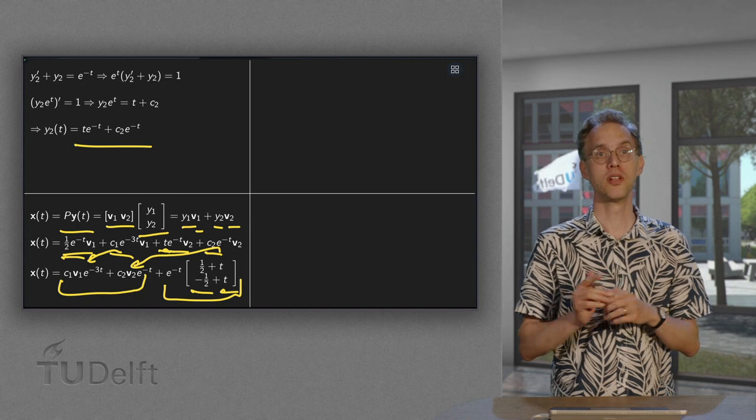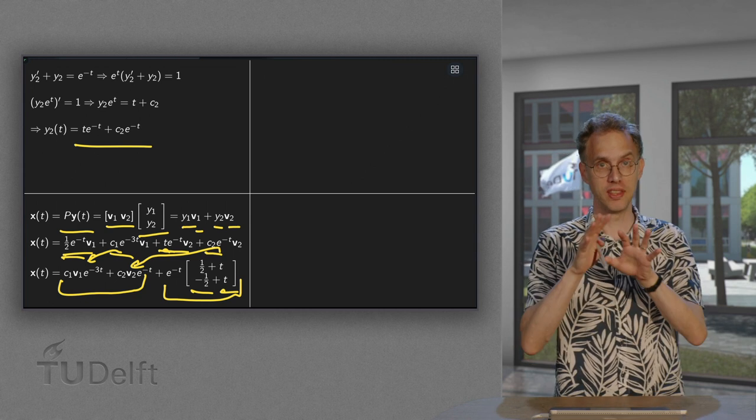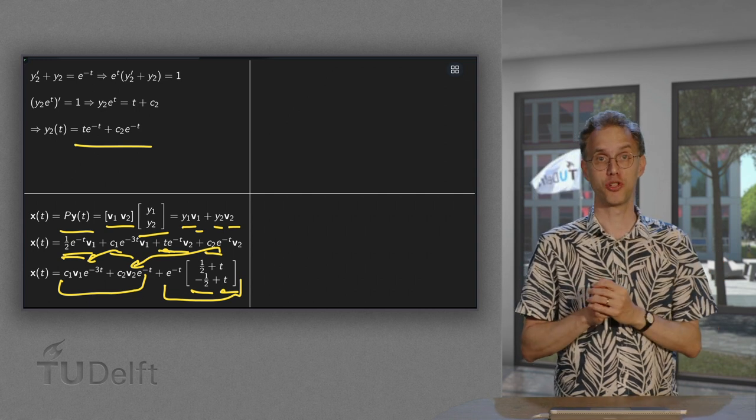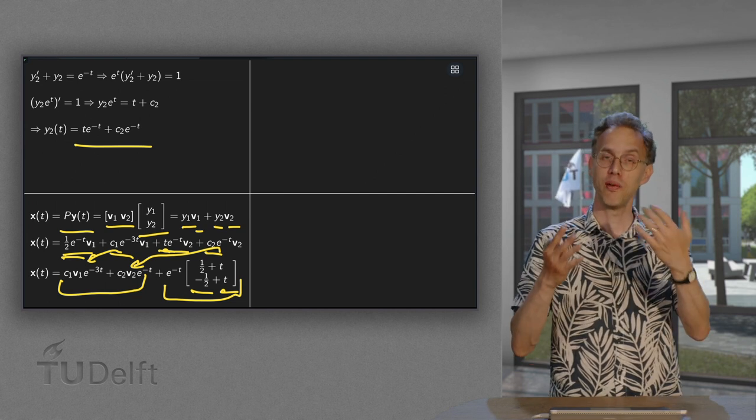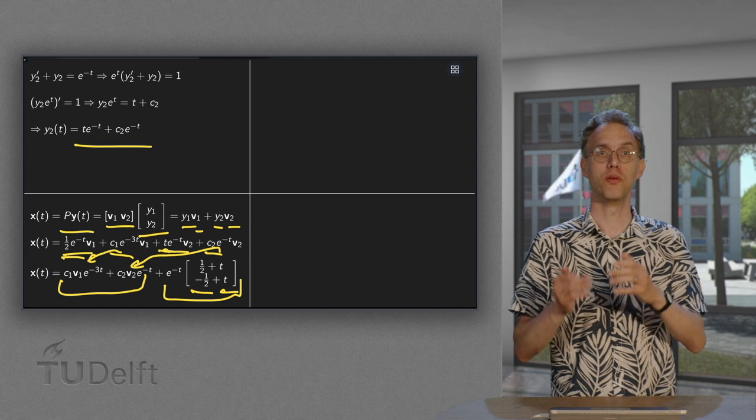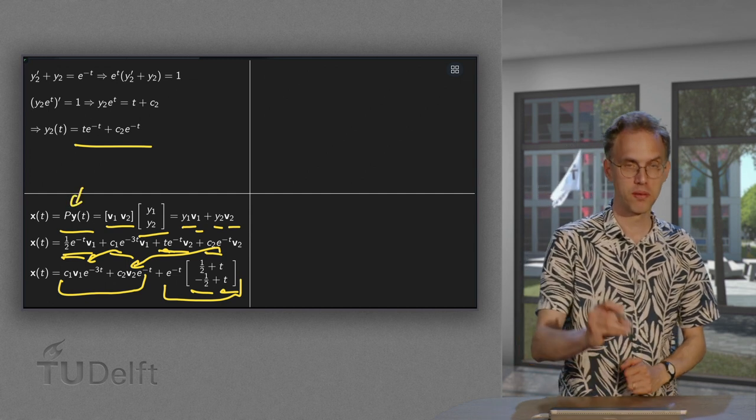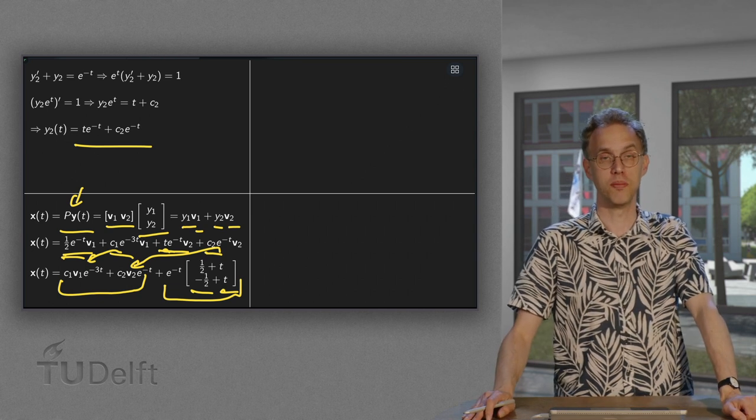So what are the steps? First you use the diagonalization tool, decouple. That always works, it's always standard. Then you have to solve for y1 and y2. It can be tricky because there's some integration there. And once you have your y1 and y2 you can compute your x. And that is standard again because x equals P times y. So this is how you use the method. And these are the steps and the standard parts and the tricky parts.